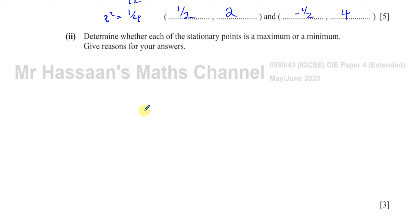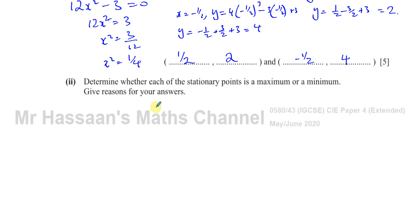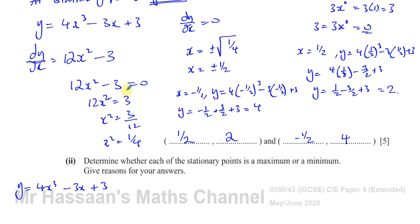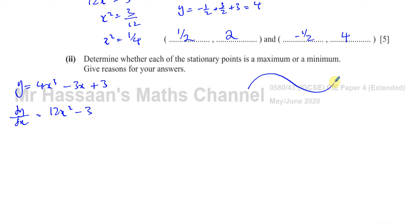Now it says: determine whether each stationary point is a maximum or a minimum, and give reasons. So we started with y equals 4x cubed minus 3x plus 3, and we found dy/dx equals 12x squared minus 3. We also determined the graph has a rise-fall-rise shape, and we've found the coordinates of both stationary points.